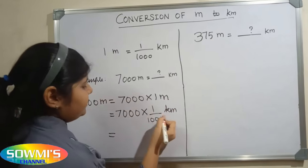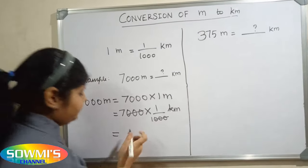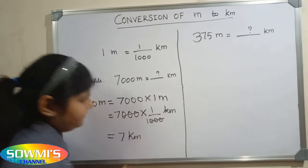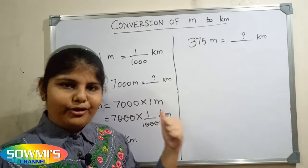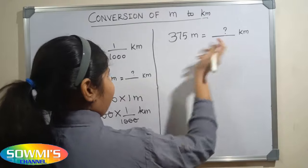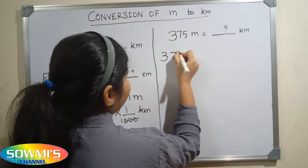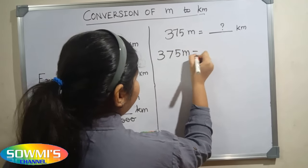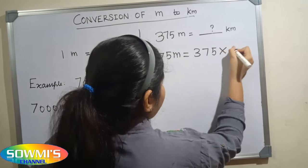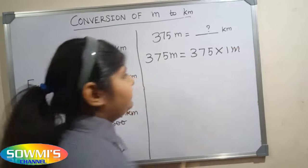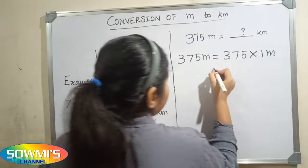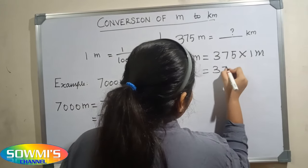The zeros cancel, so the answer is seven kilometers. Let us take one more example: three hundred and seventy-five meters into kilometers. Three hundred and seventy-five meters is equal to three hundred and seventy-five multiplied by one meter, where one meter equals one divided by one thousand kilometers.